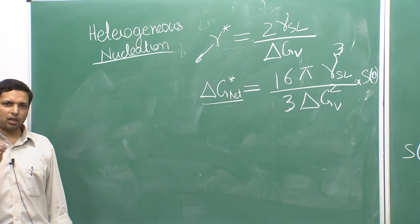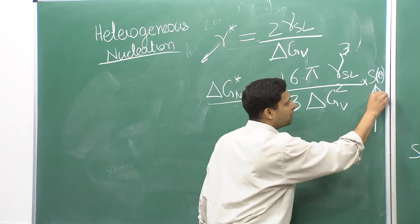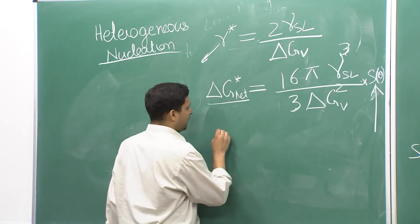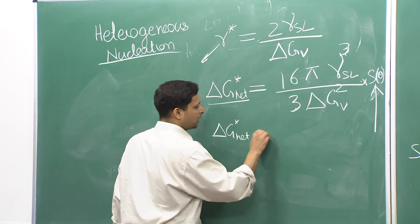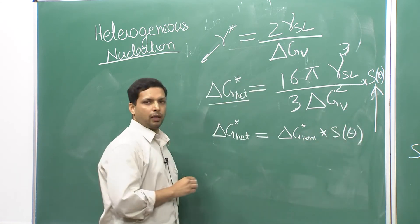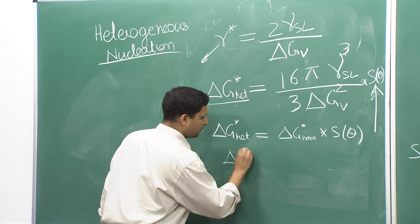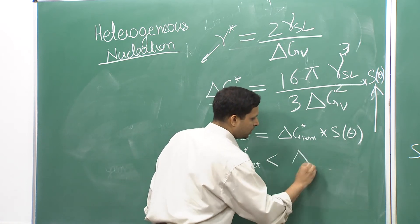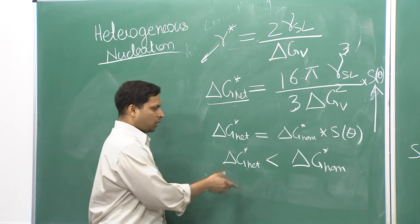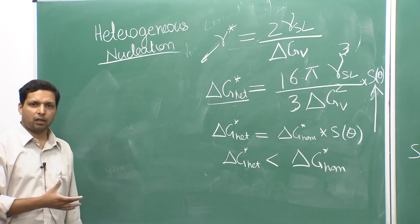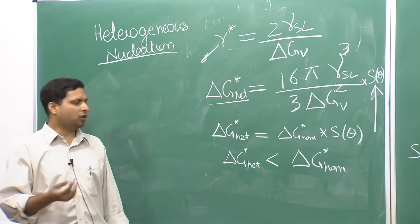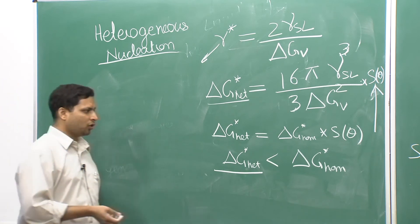ΔG* for heterogeneous nucleation is just a little bit different — it is the homogeneous ΔG* multiplied by S(θ). So ΔG*_heterogeneous = ΔG*_homogeneous × S(θ), which means ΔG*_heterogeneous is always less than ΔG*_homogeneous. You want a smaller ΔG* for easy nucleation, and therefore heterogeneous nucleation is easier than homogeneous nucleation.